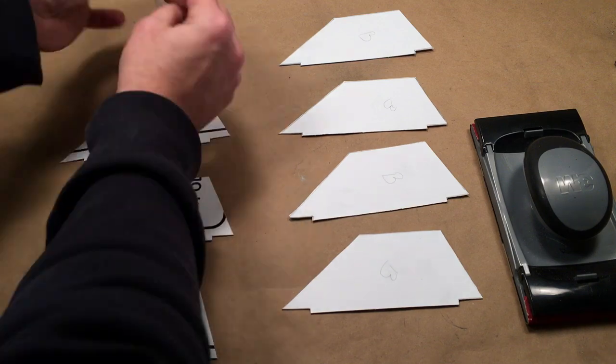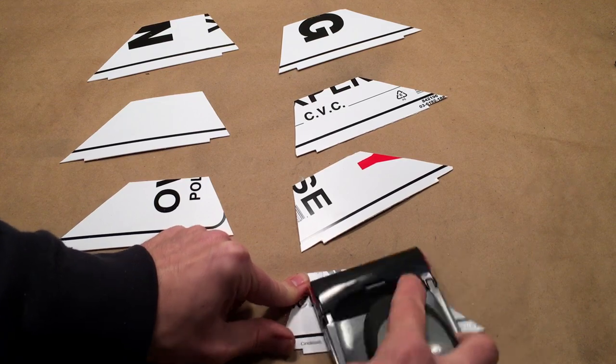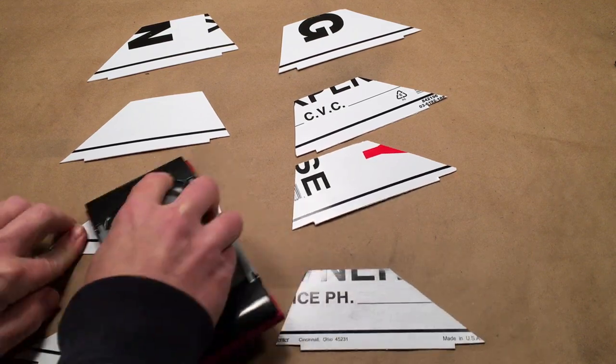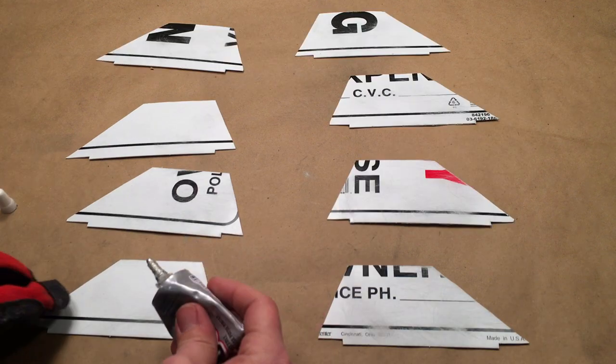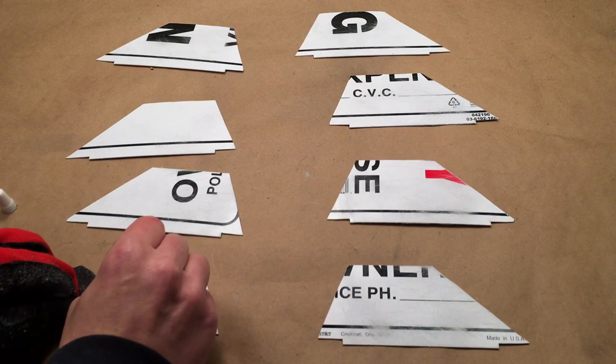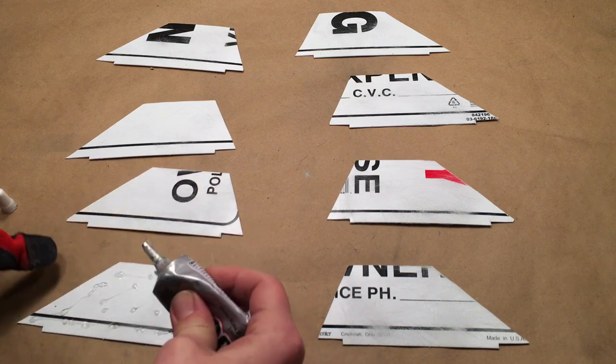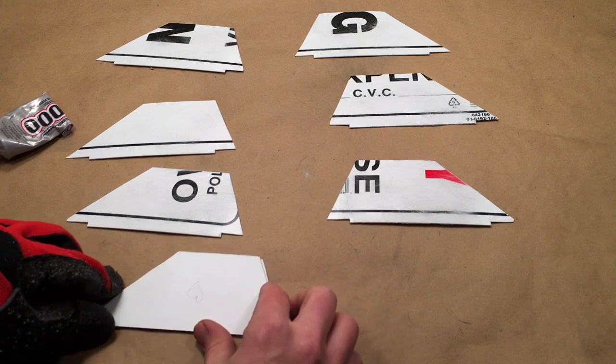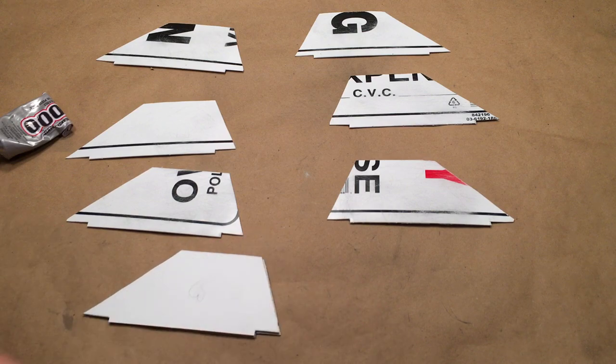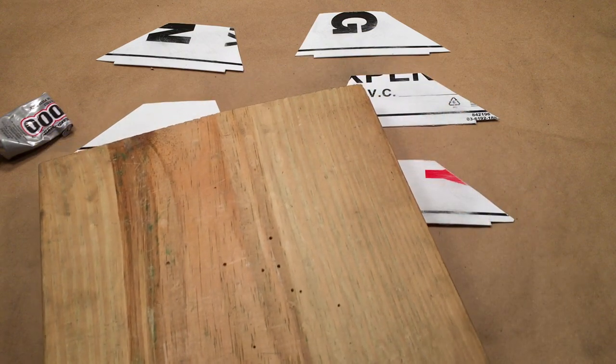Flip the fins over so that the side with the print is showing. Go over each fin with 220 grit sandpaper. Apply E6000 adhesive and secure the fins together. Place a flat heavy object on the fins and allow them to dry for 24 hours.